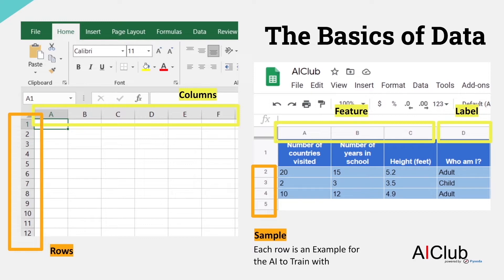First thing to note is that there is a single column called label and rest everything is features. Label refers to what you would like your AI to predict and features represent information that you will provide your AI for it to make predictions. For example, in this dataset, the features are number of countries visited, number of years in school, and height. And the label is who am I?